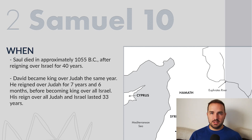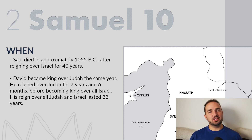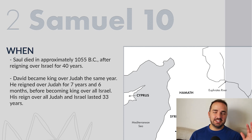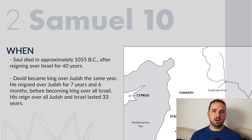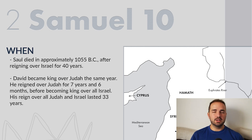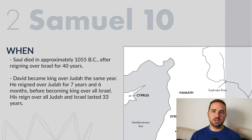When did the events of chapter 10 happen? The same time as all the other chapters we discuss in this book. David became the king of Judah around 1055 BC. He would eventually become the king of Judah and Israel, and his total reign would be approximately 40 years.